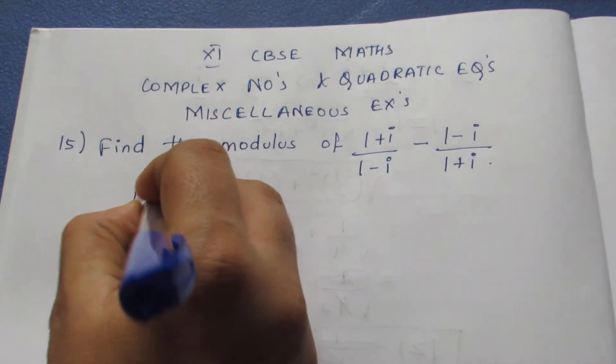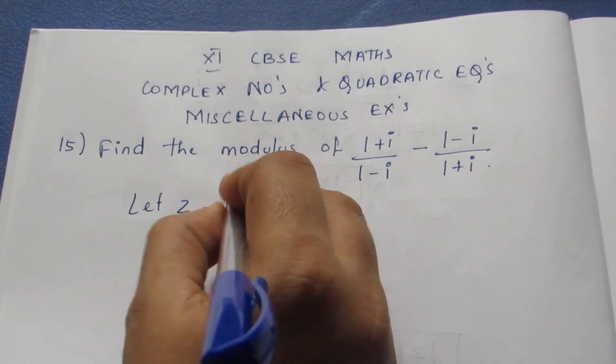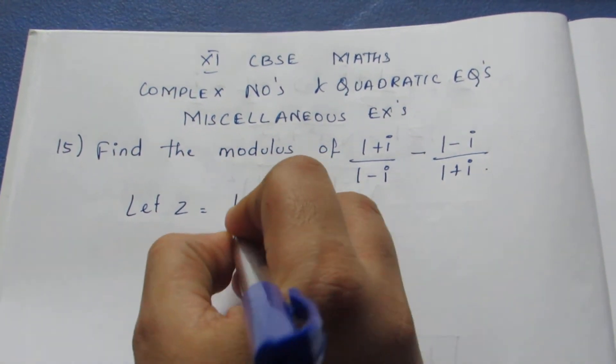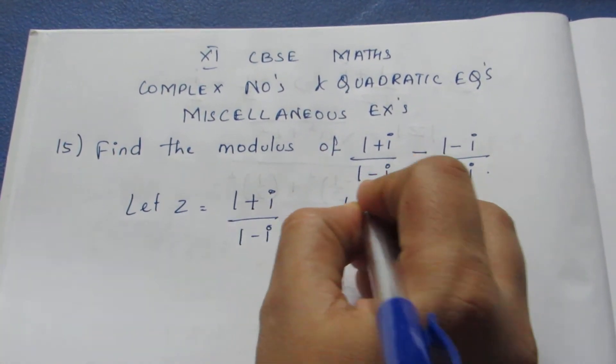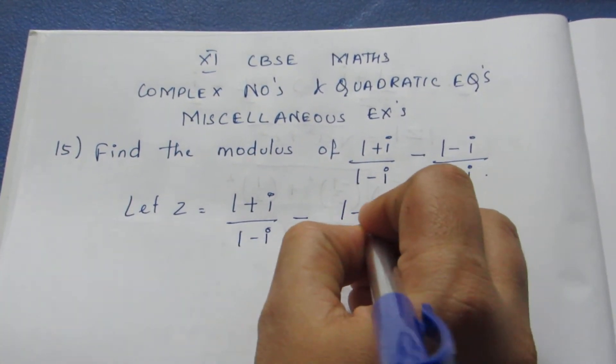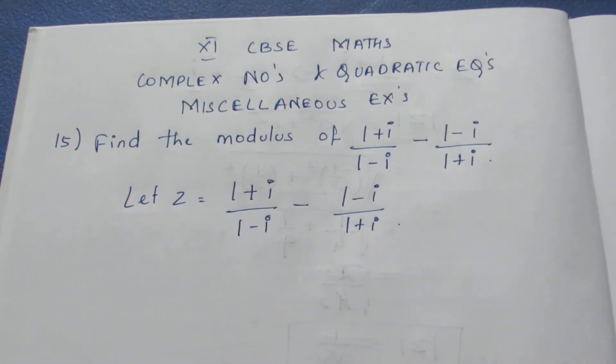So let me take z equal to the given value: (1 + i)/(1 - i) minus (1 - i)/(1 + i). We have taken the complex number to be z.